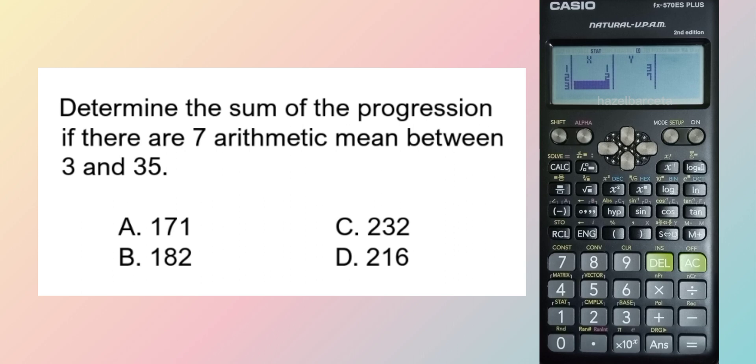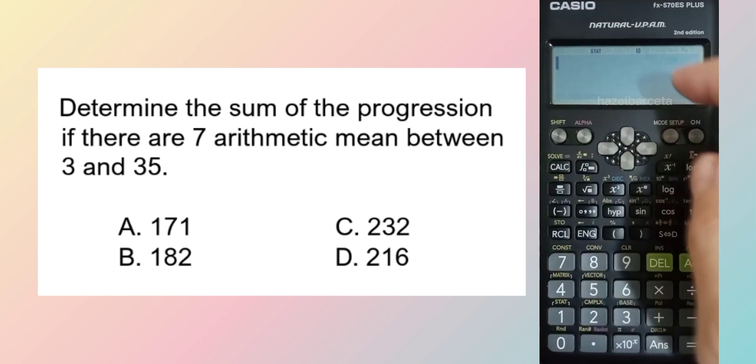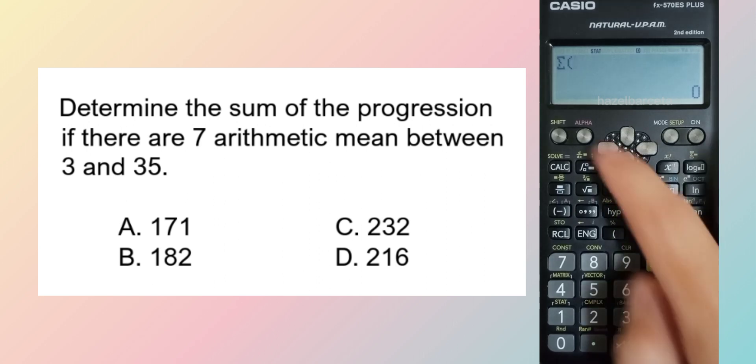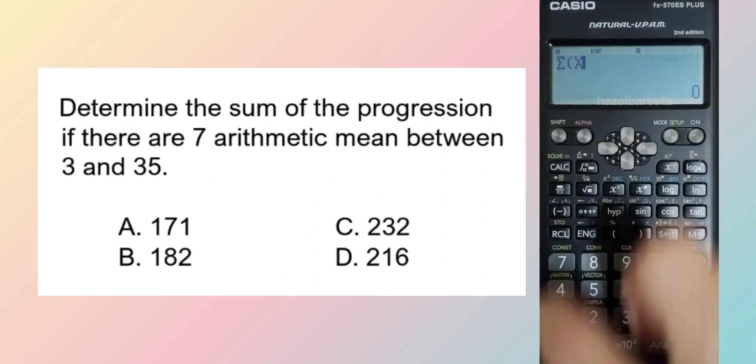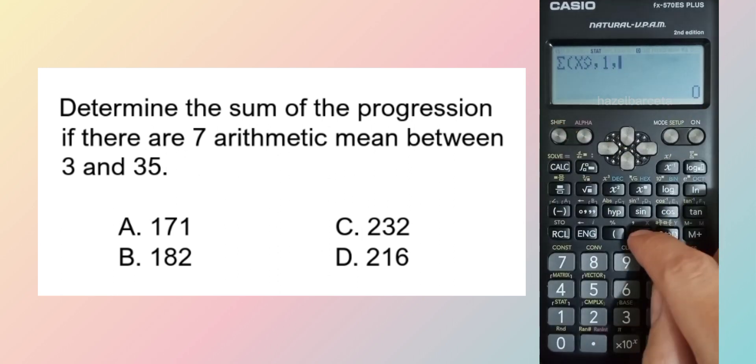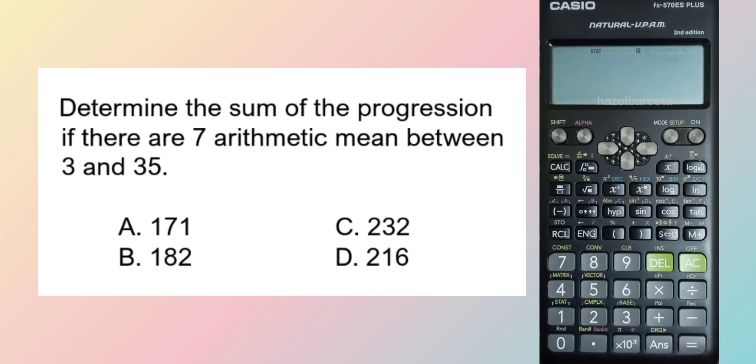We have the first and the second, and that is enough. We are to solve for the summation. Shift 1-5-5, first term 1, and the last term is 9. So the summation is 171, letter A.